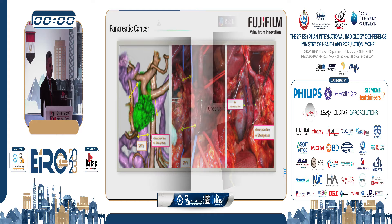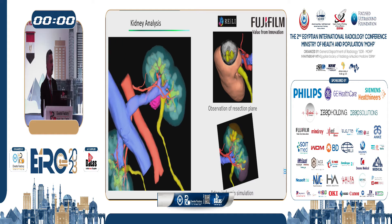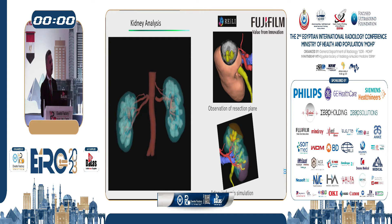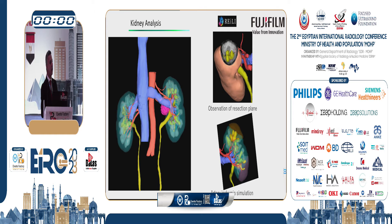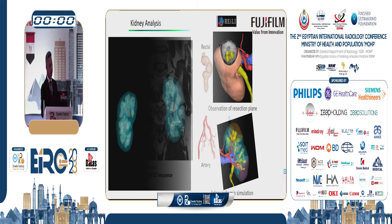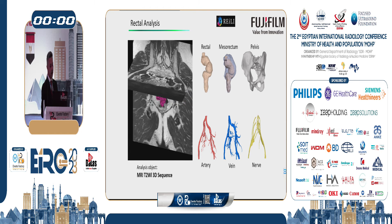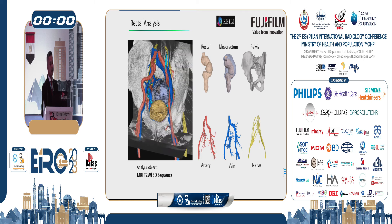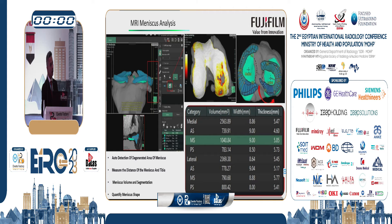For kidney analysis, Synapse 3D with one click can configure, segment, separate, and determine the contour of the kidney, specify the renal artery, renal veins, and ureter, extract the tumor, and observe resection planning. It can also detect blood flow in the renal artery for ischemic simulation. For MRI rectal analysis, it separates and extracts the rectum, mesorectum, pelvic artery, vein, and nerve. The final module covered is the degeneration of the meniscus of the knee.